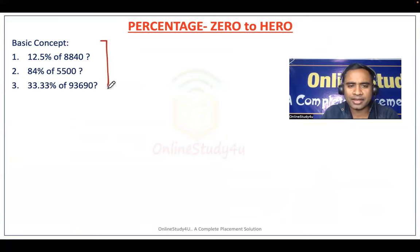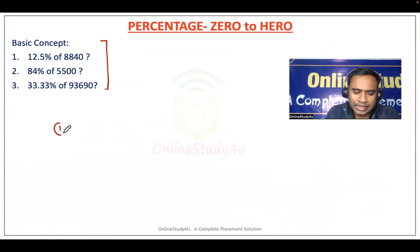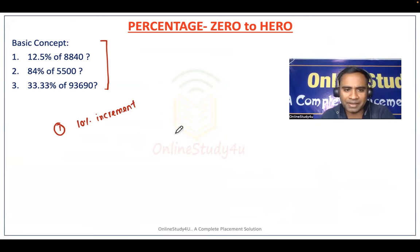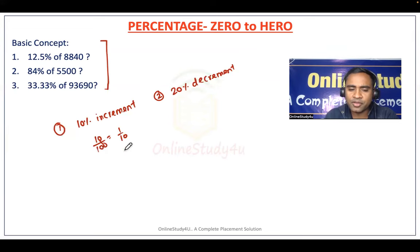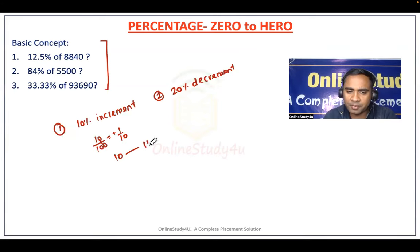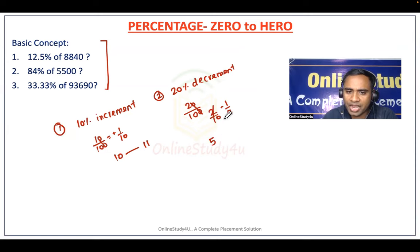The first thing you should know is how to calculate percentage faster. If a question says 10% increment, then 10% means 10/100, which is 1/10. If it is an increment, in 10 there is one increment — so it becomes 11. For 20% decrement, 20/100 = 1/5. In 5, there is a decrement of 1, so it becomes 4. This is how you write it.